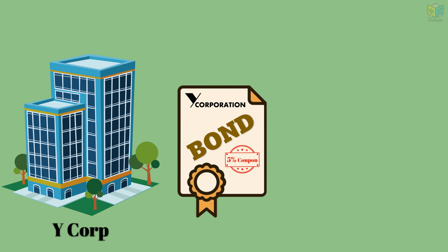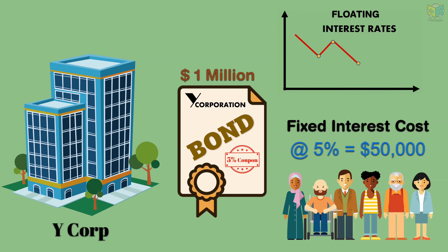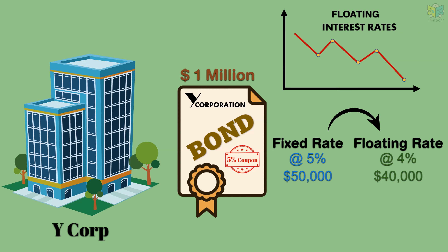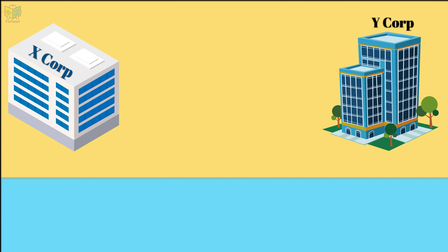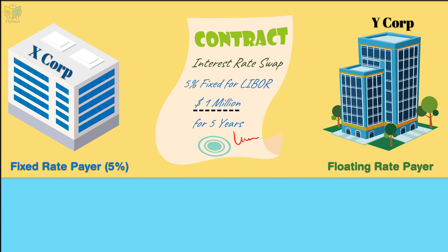On the other hand, let us assume Y Corp has issued fixed coupon paying bonds worth $1 million. Every year, it has to pay a fixed interest of 5% to its bondholders. Y Corp speculates that floating interest rates will fall in the future and will be lower than 5%. If it could convert the existing fixed rate liability into a floating rate liability, the interest cost will reduce. X Corp and Y Corp enter into a swap contract, in which X Corp agrees to pay the fixed rate of 5% and Y Corp agrees to pay the floating rate LIBOR. The notional principal is taken as $1 million, and the swap will be settled annually for the next five years. The notional principal is theoretical and is not exchanged between the parties.